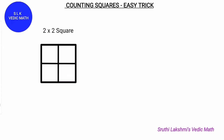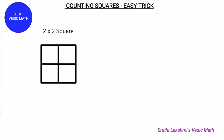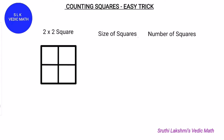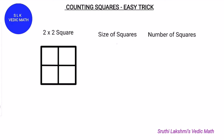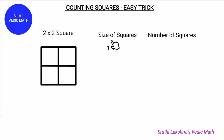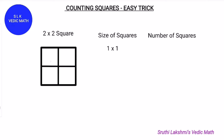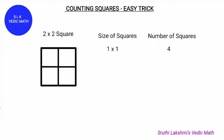Let's see this figure. This figure is a 2 by 2 square. To find how many squares are there in this 2 by 2 grid, we have to find the size of the squares and how many squares there are of each size. Let's see how many 1 by 1 squares there are: 1, 2, 3 and 4. So there are 4 one-by-one squares.